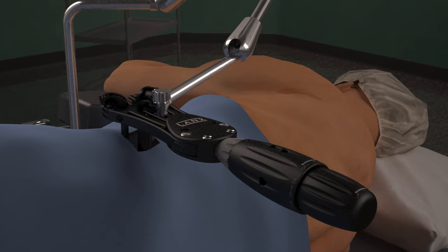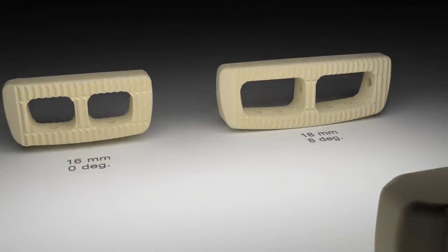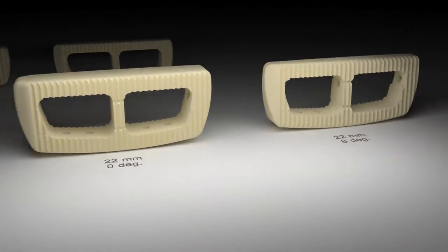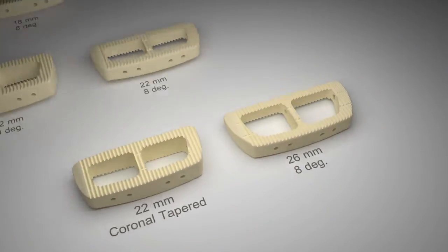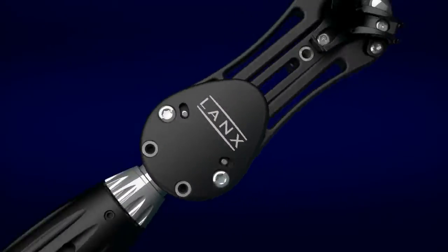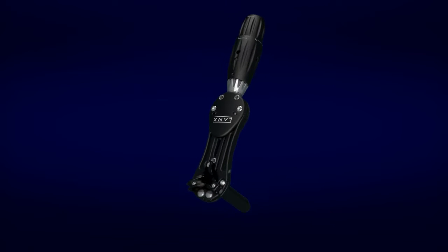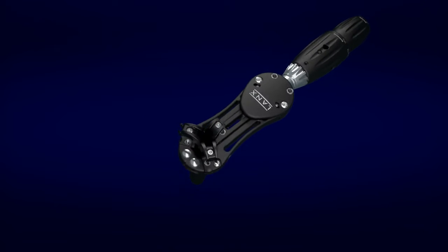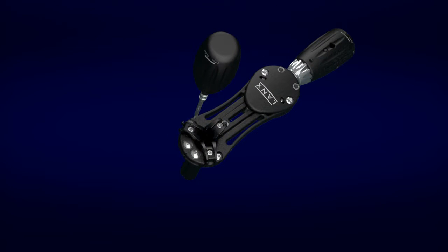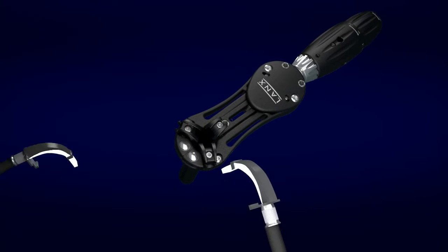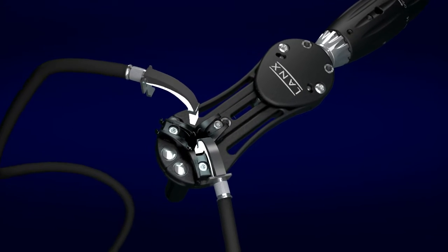The Timberline Lateral Fusion System includes a broad selection of peak intervertebral spacers ranging in widths, lengths, heights, lordotic and coronal angles. The highlight is the modular three-blade radiolucent retractor system that combines infinite resolution retraction with durable aluminum construction. Combined with a unique fiber-optic light source, this system enables exceptional visualization and versatility.